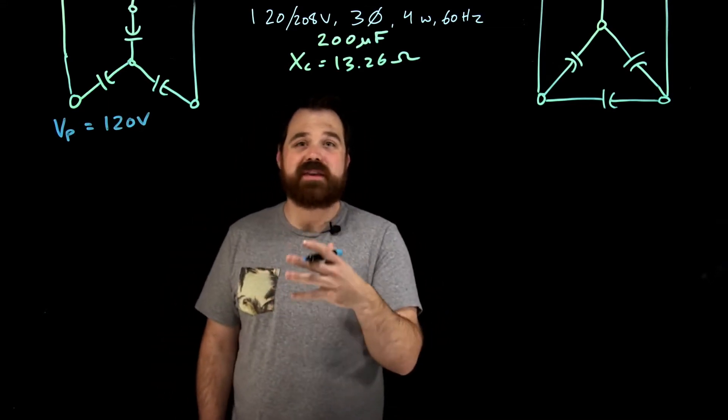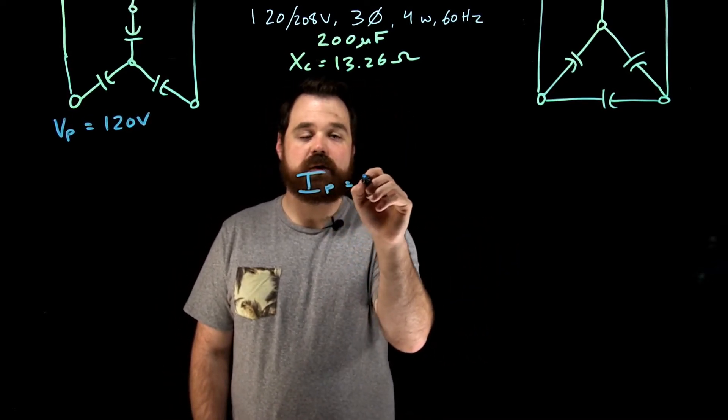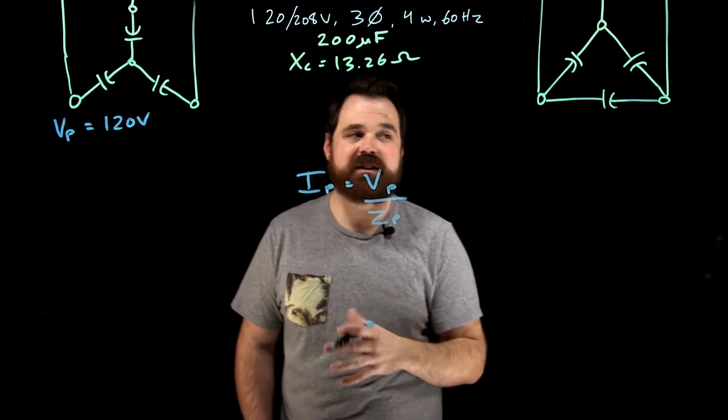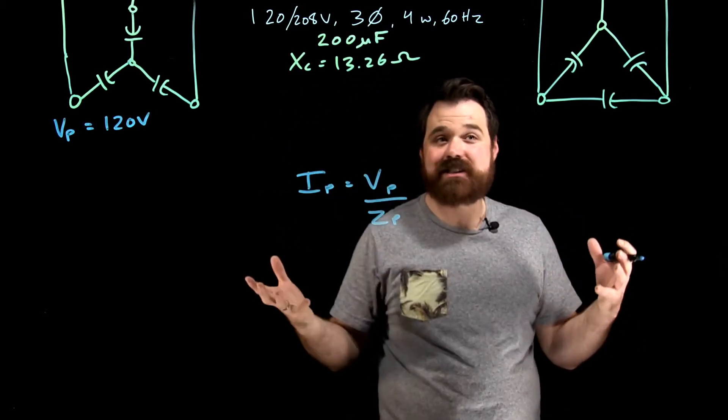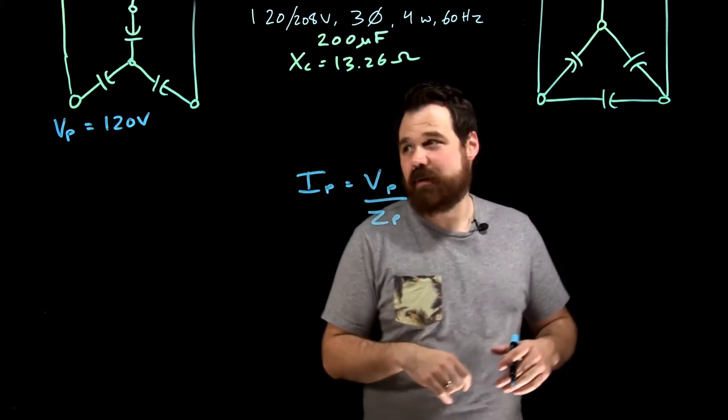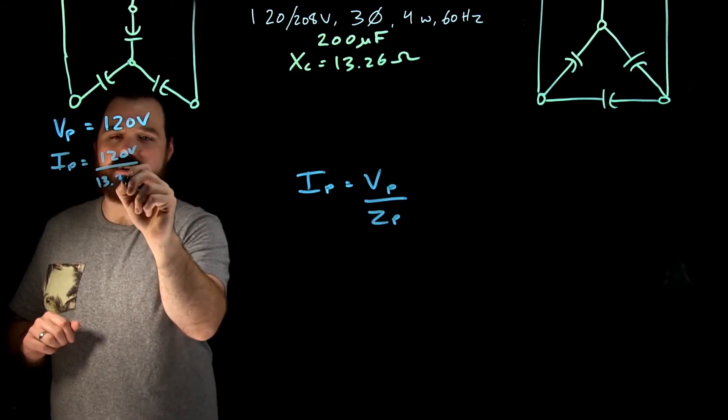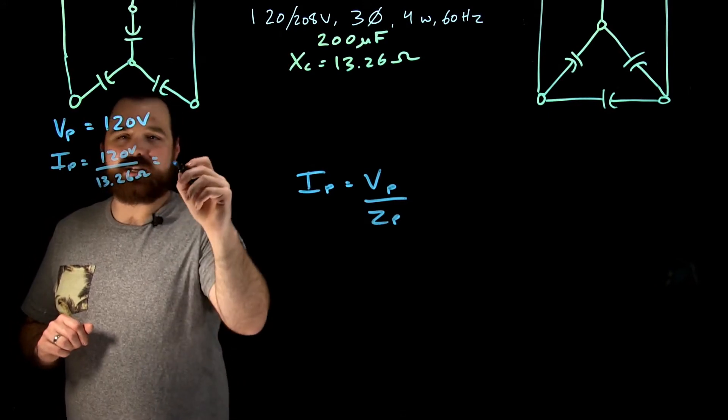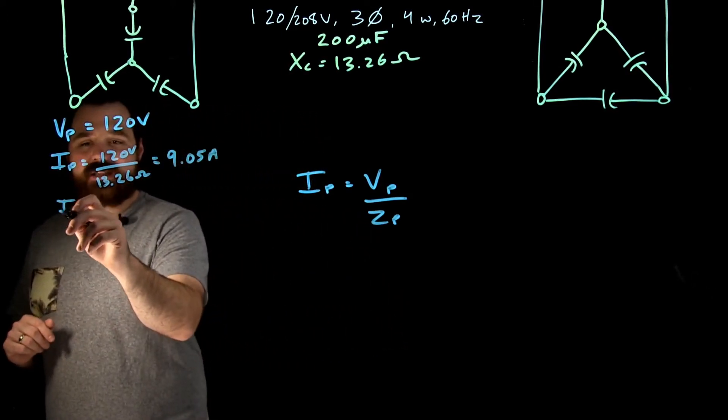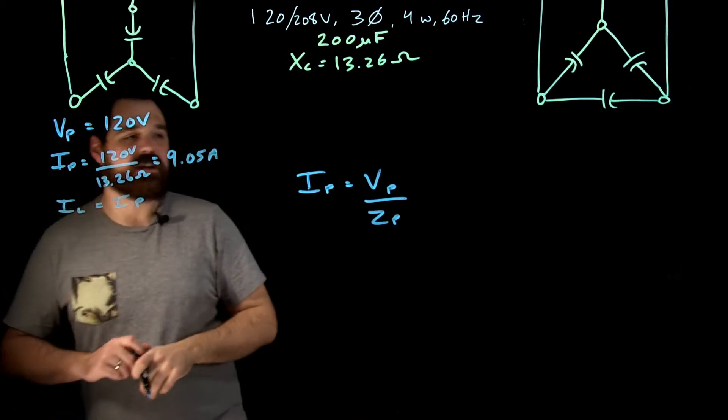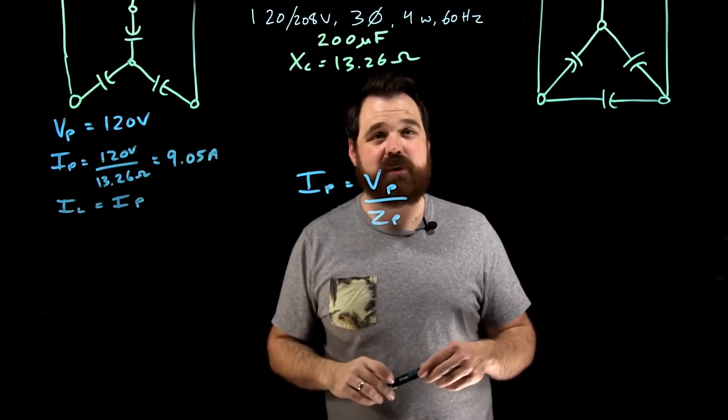Now we want to calculate the current within the phase. So current within a phase, we're going to use the formula I phase equals V phase divided by Z phase. And again, remembering here, our Z phase is the same as our XC. XC, Z, they're the same, because there's no resistive component inside that resistor. So I'm going to go, I phase over here, 120 volts divided by 13.26 ohms. It's going to give me 9.05 amps. The other thing we know in Y is that I line equals I phase. So that's what we would calculate in each phase and on each line over here, we're going to have 9.05 amps of current.